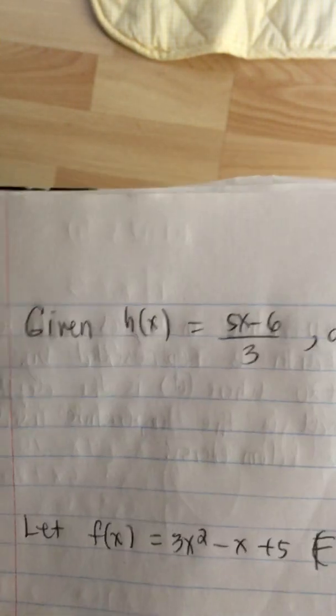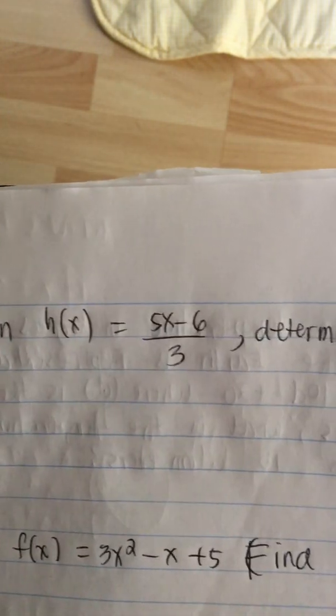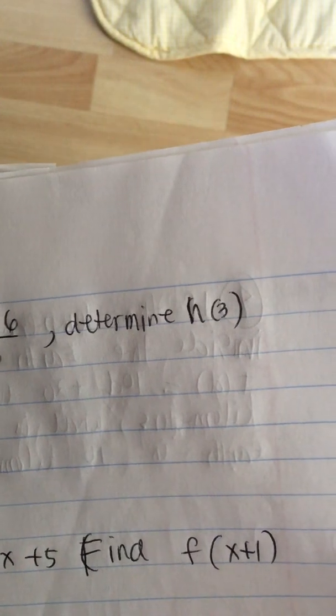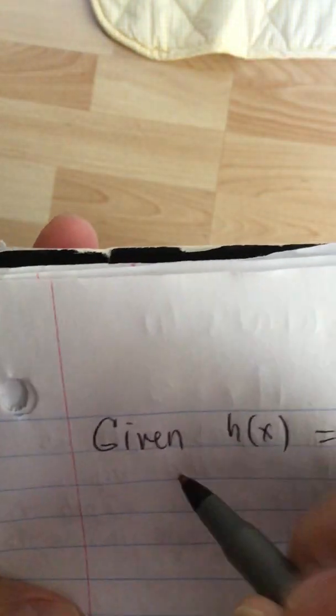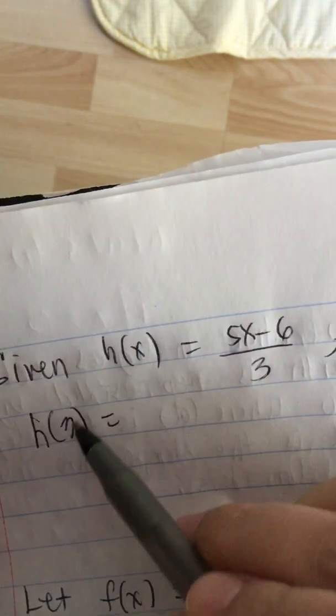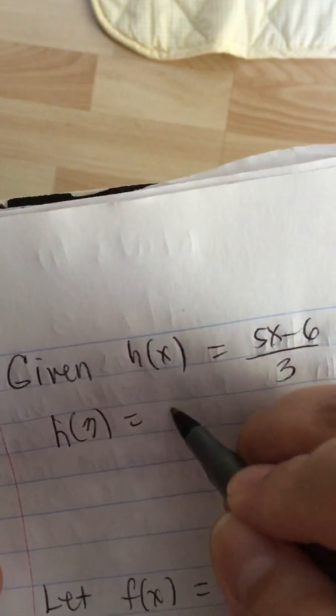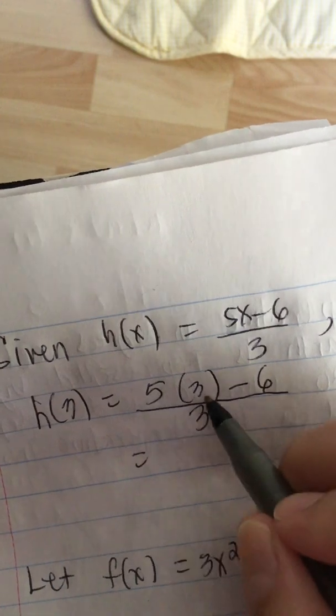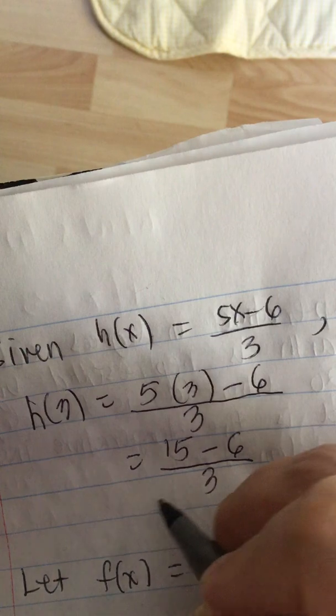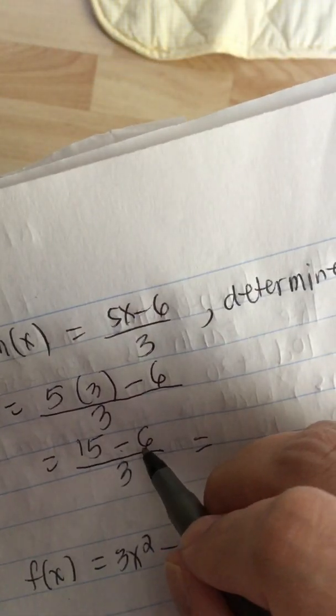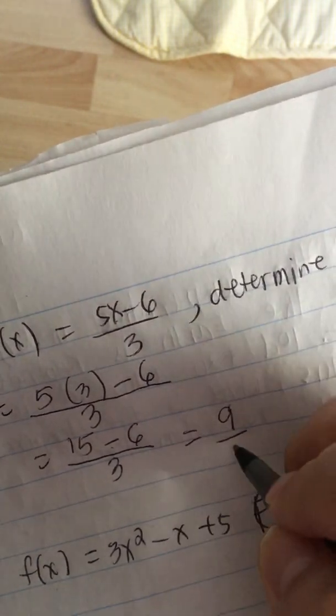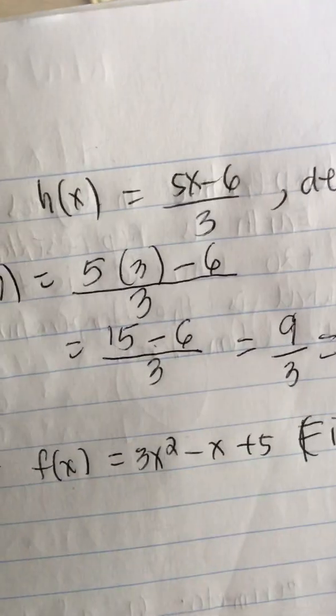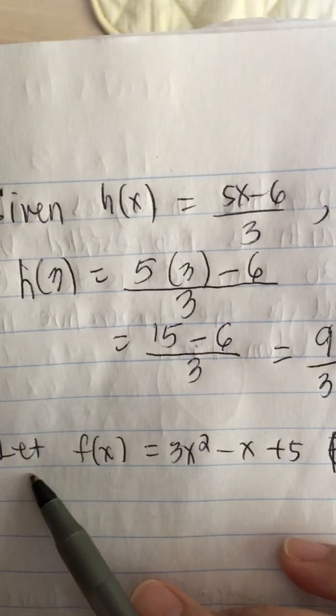So we have more function problems here. Given h(x) is equal to 5x minus 6 all over 3, they want us to determine what is h(3). To do this, we put in h(3) equals, whenever there is an x we replace it with 3, so 5 times 3 minus 6 all over 3. So 5 times 3 is 15 minus 6 all over 3, and this is equal to 15 minus 6 is 9 all over 3, or 9 over 3 is 3. Answer.